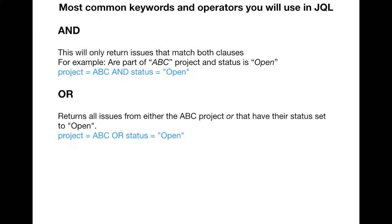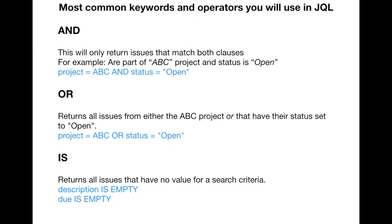The third keyword is IS. IS returns all issues that have no value for a search criteria. If you're looking for issues which don't have any value in a particular field, you use the IS keyword. For example: project = ABC AND description IS EMPTY will list all issues in project ABC for which the description is empty. Similarly, you can search for issues where the due date is empty.